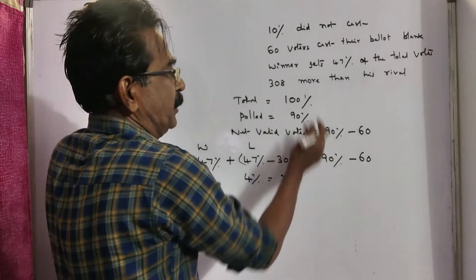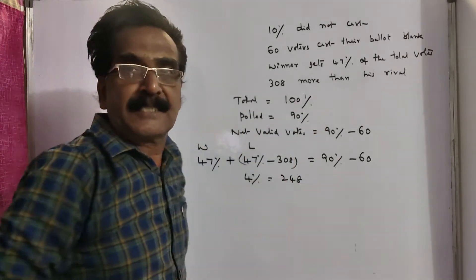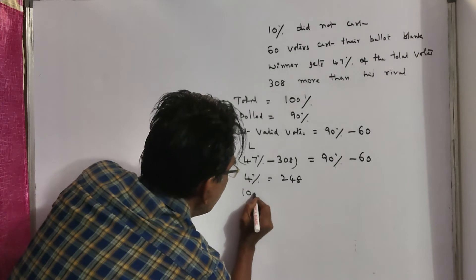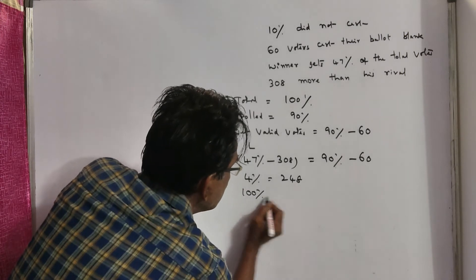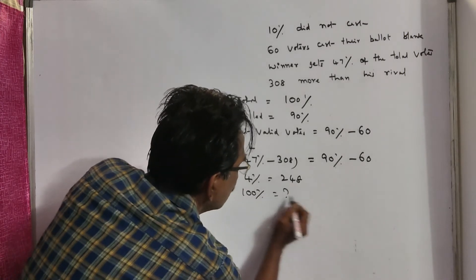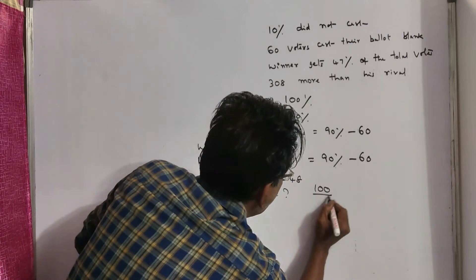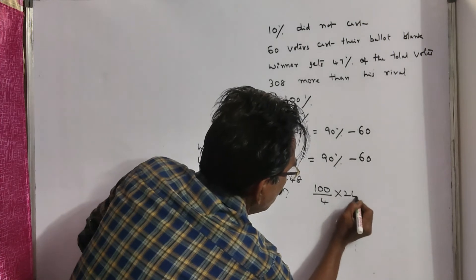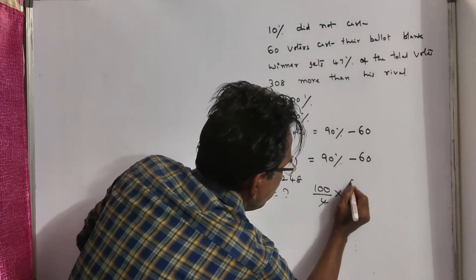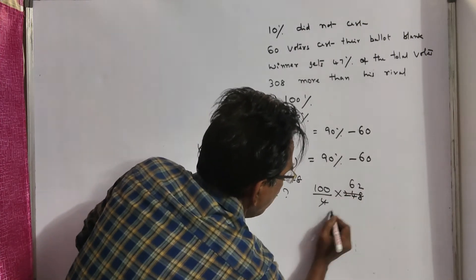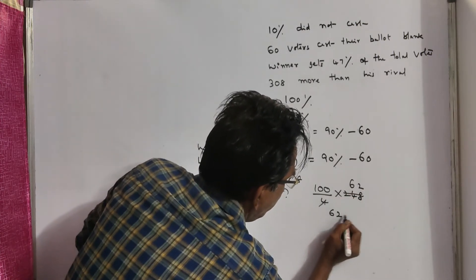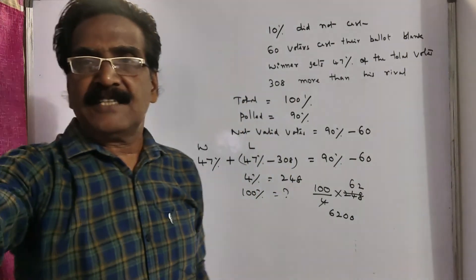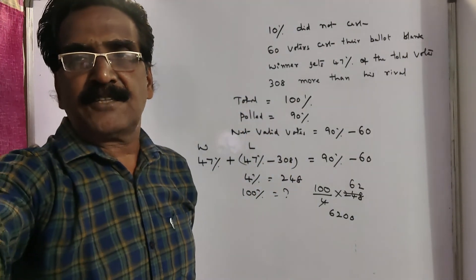4 percent equals 248. We want 100 percent to get the total number of votes. So 100 percent equals (100 divided by 4) times 248, which gives 6200. So the total number of enrolled voters is 6200. Thank you, have a nice day!